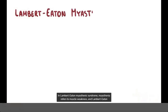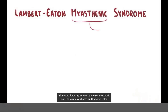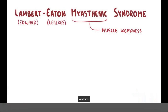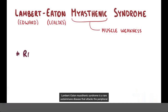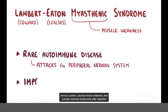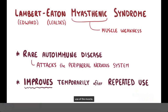In Lambert-Eaton myasthenic syndrome, myasthenia refers to muscle weakness, and Lambert-Eaton refers to Edward Lambert and Lealdes Eaton, the two physicians who first described the condition. Lambert-Eaton myasthenic syndrome is a rare autoimmune disease that attacks the peripheral nervous system, causing muscle weakness, and actually improves temporarily after repeated use of the muscle.